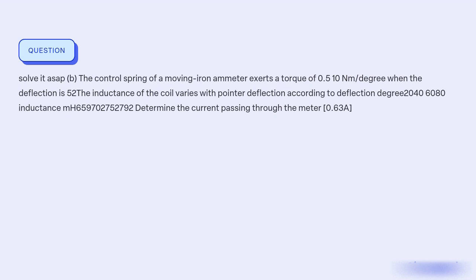Why does the current passing through the meter when the deflection is 52 degrees, given the torque exerted by the control spring and the varying inductance of the coil?